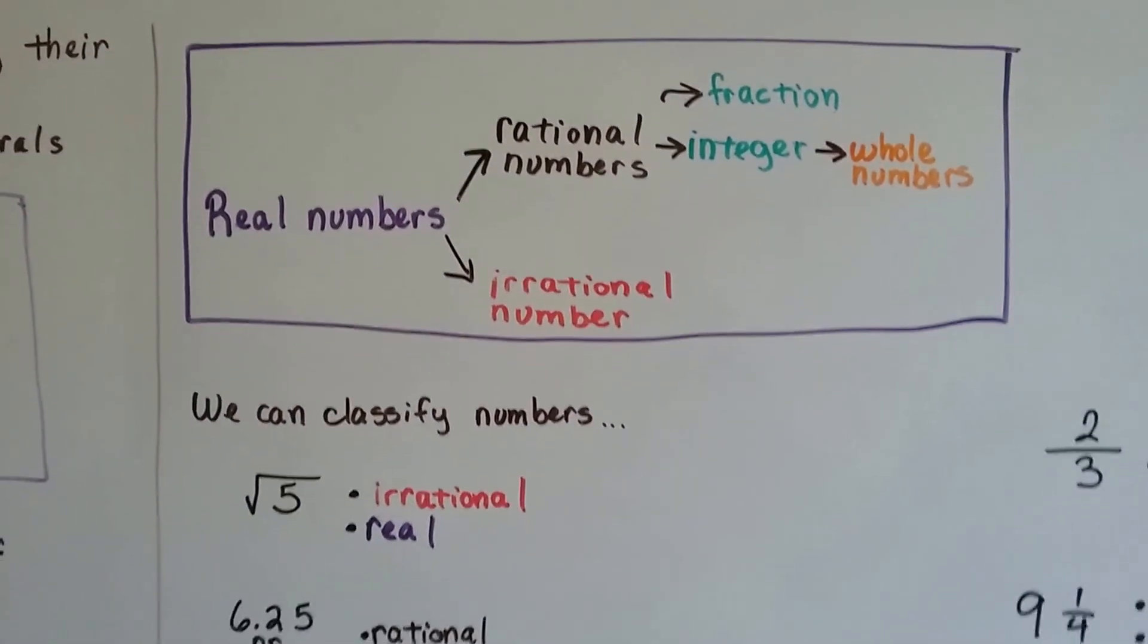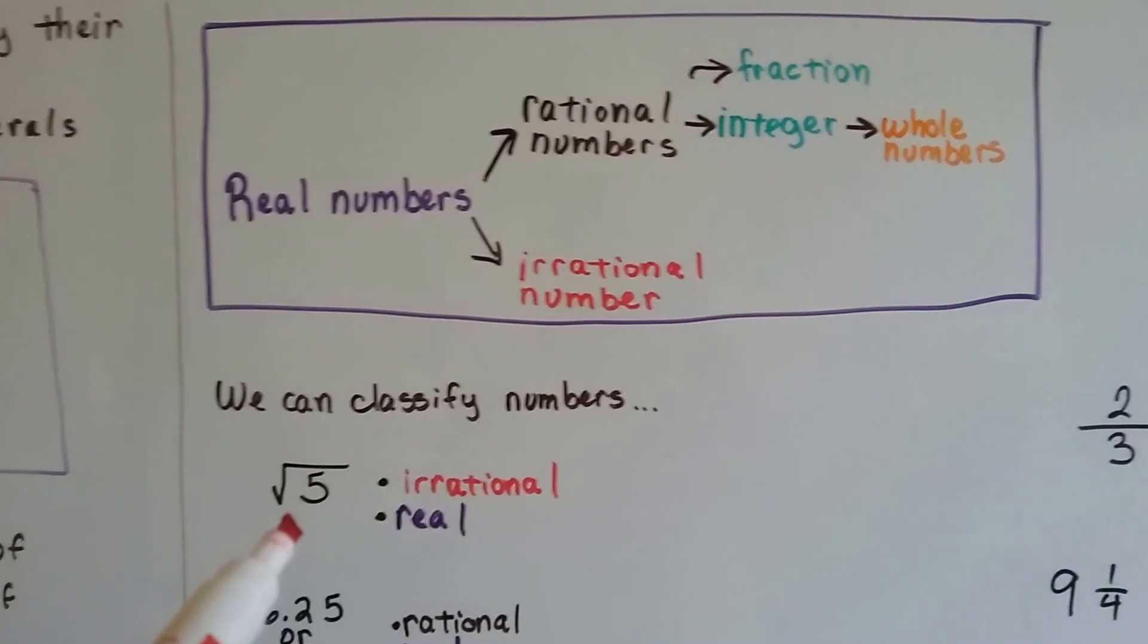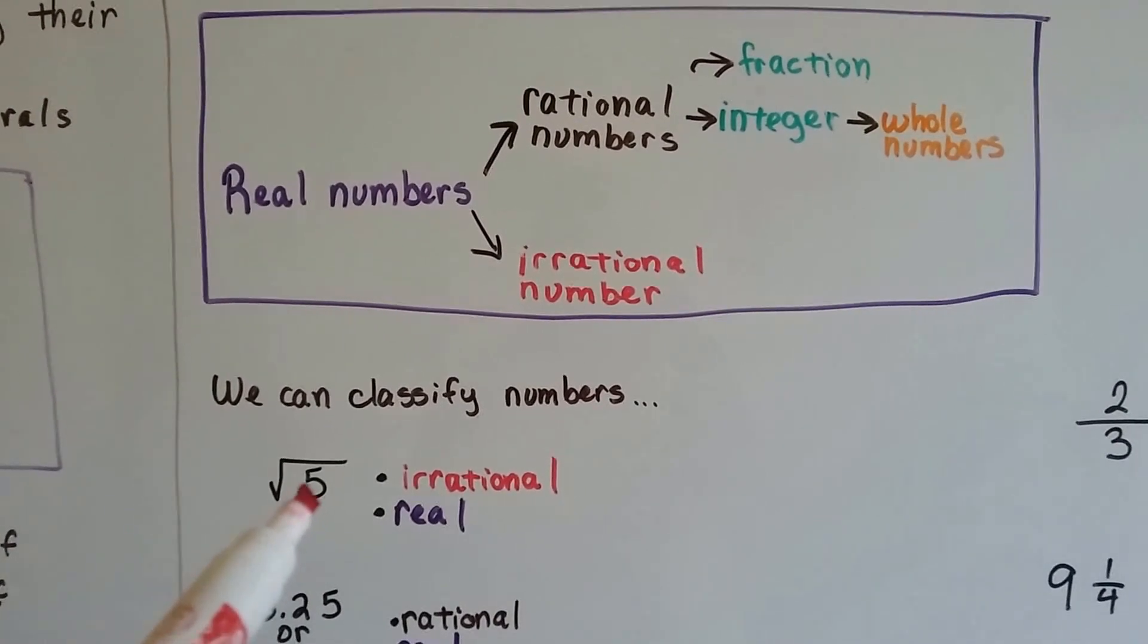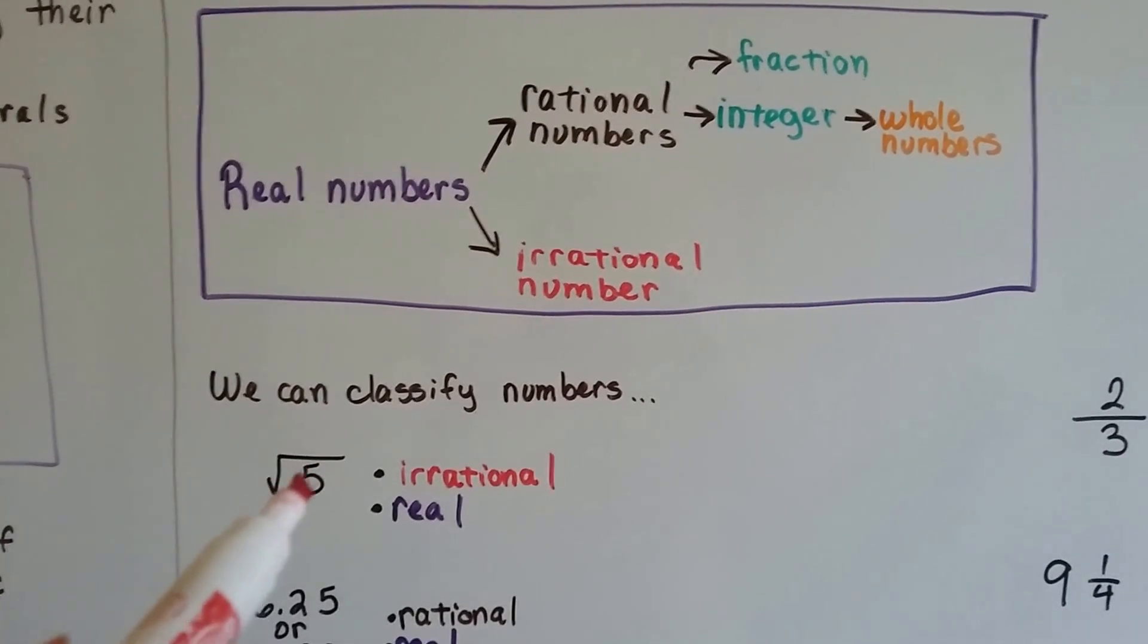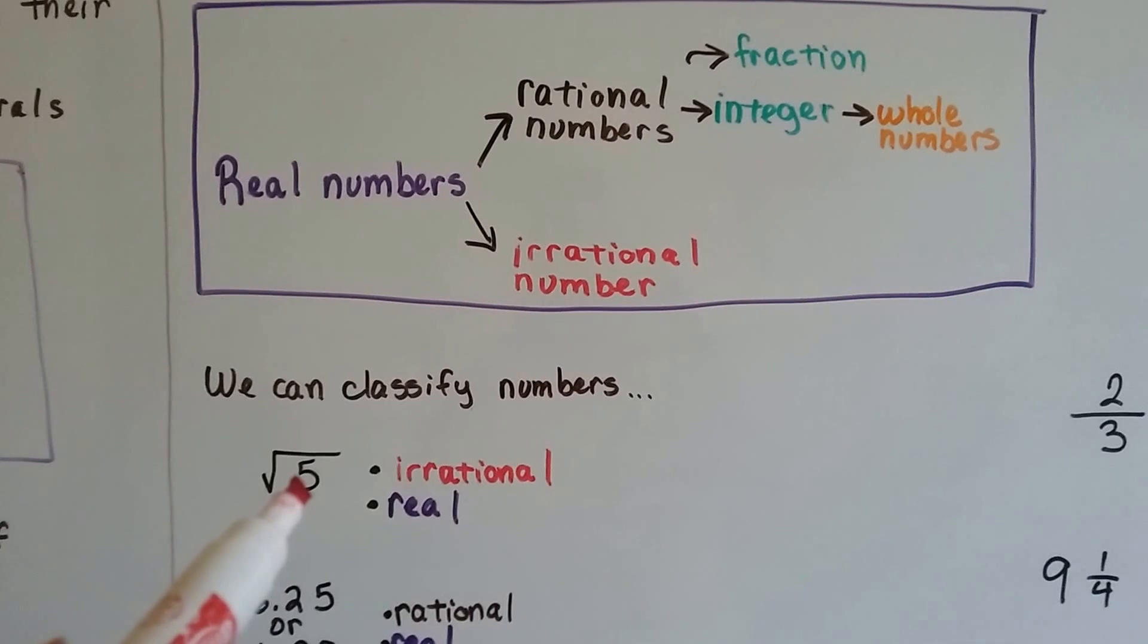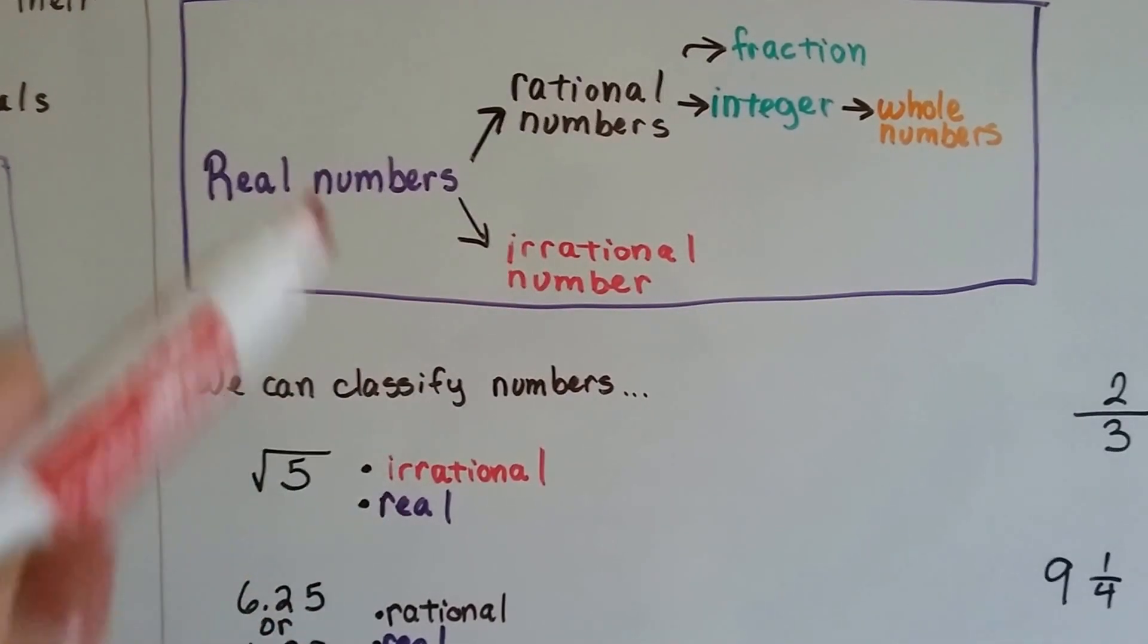So, we can classify them. The square root of 5, well, that's not a perfect square. A whole number and a whole number can't be multiplied together to get a 5. So, it's irrational and it's real.